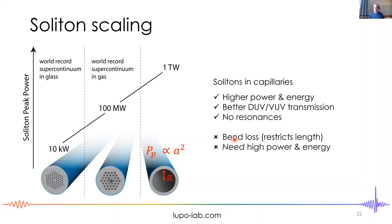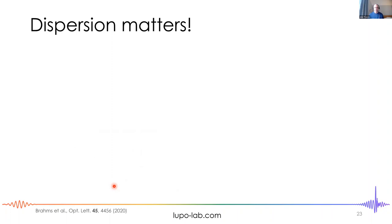Doing soliton dynamics in capillaries gives higher power and energy, better deep UV and VUV transmission, and cleaner dynamics. However, it was not at all obvious that soliton dynamics could be generated in capillaries — this was the main topic of my ERC Starting Grant. Capillaries have terrible bend loss and are only good over short lengths. And for low energies, small cores produce very high loss. For low energy and long fibers, photonic crystal fibers — especially anti-resonant guiding ones — are the way to go.